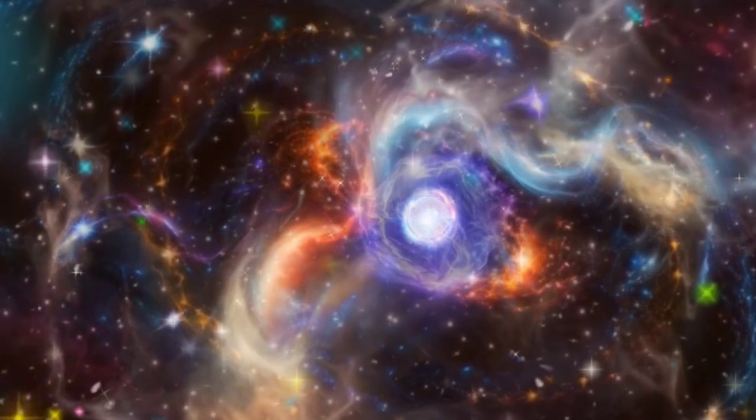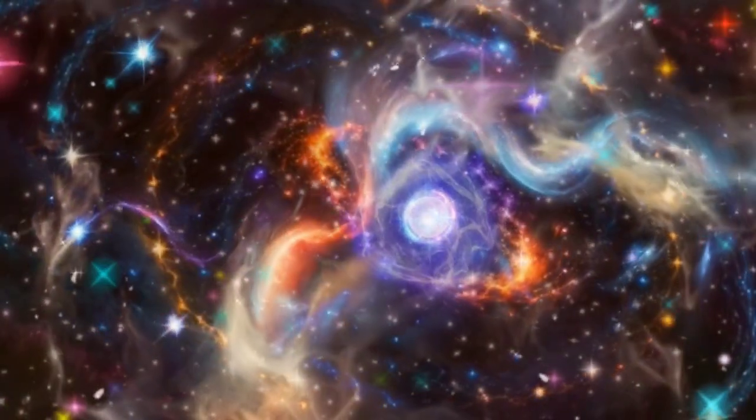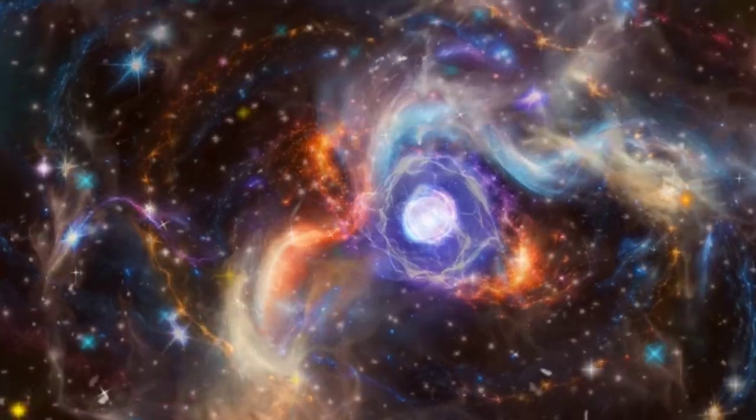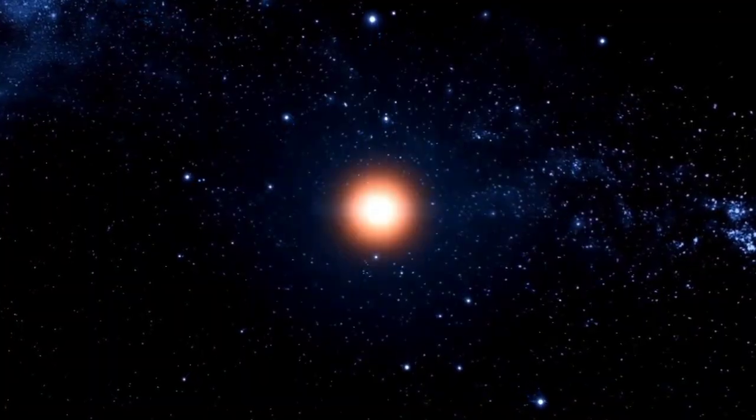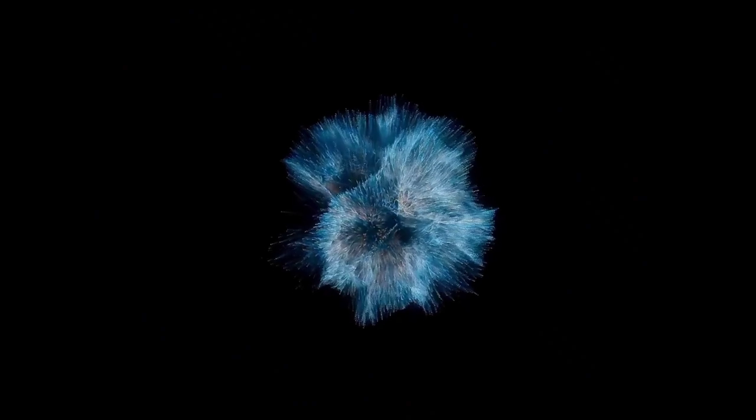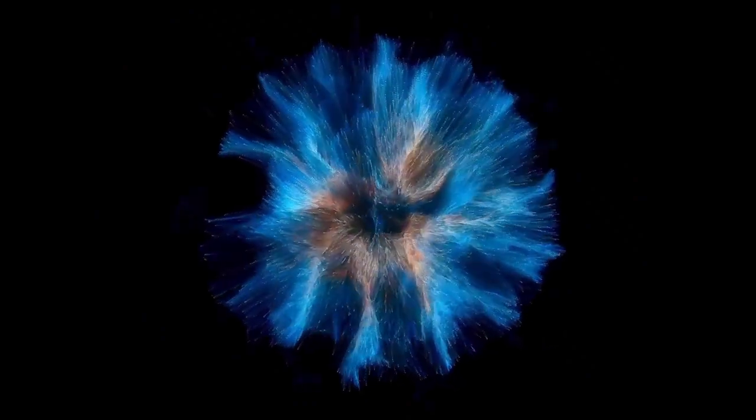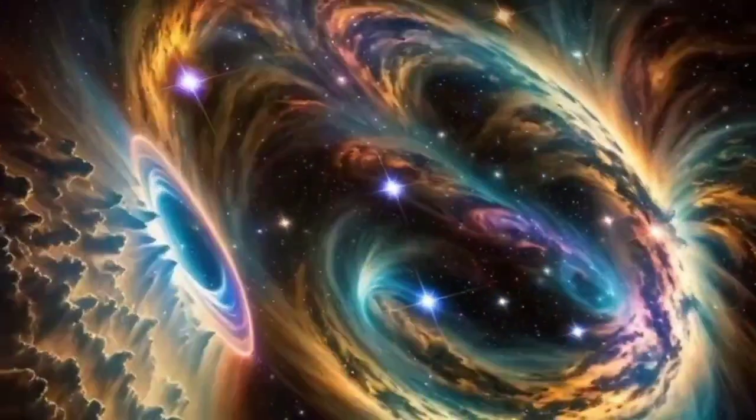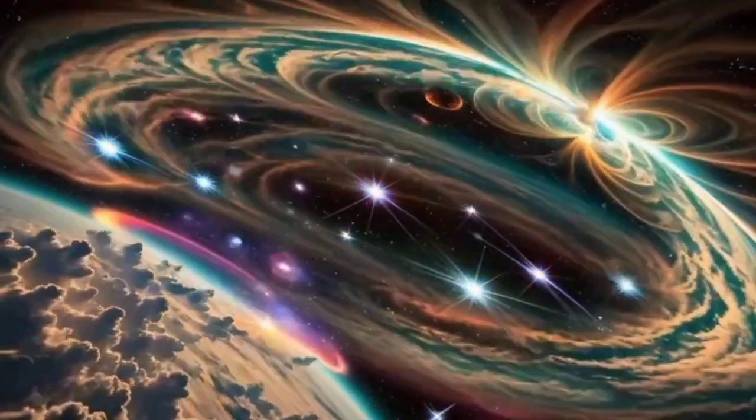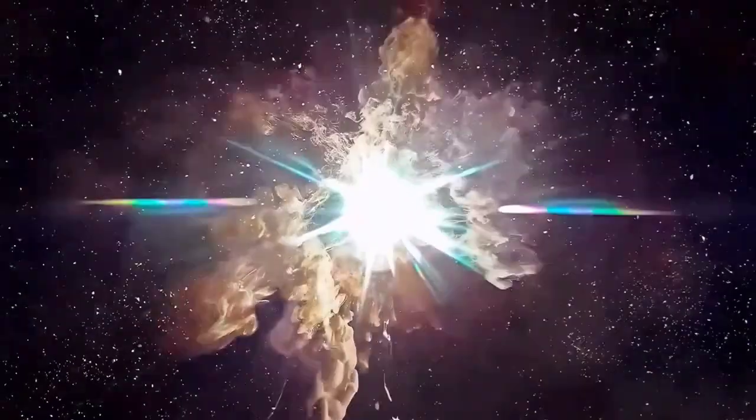While Betelgeuse's supernova is not expected to have a catastrophic effect on Earth, it will interact with our planet's atmosphere and magnetic field in fascinating ways. The energy burst from the explosion, particularly the emission of cosmic rays and charged particles, could lead to more intense auroras, expanding the regions where the northern and southern lights are visible. While these cosmic rays could affect satellite communications and some technologies on Earth, the disturbances are expected to be minor and short-lived.